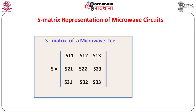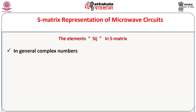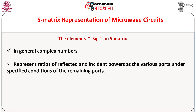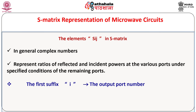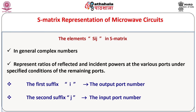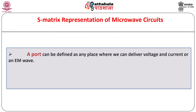A general 3×3 matrix S is as shown. It should be noted that the elements Sij in the S matrix are in general complex numbers and represent ratios of reflected and incident powers at the various ports under specified conditions of the remaining ports. Generally in Sij the first suffix i corresponds to the output port number while the second suffix j corresponds to the input port number. Loosely speaking, a port can be defined as any place where we can deliver voltage and current or an electromagnetic wave. An arm on the other hand is a continuous geometrical unit. However, one should be careful about the numbering of the ports or arms while obtaining S matrix representation of the microwave T's or any other hybrid component.